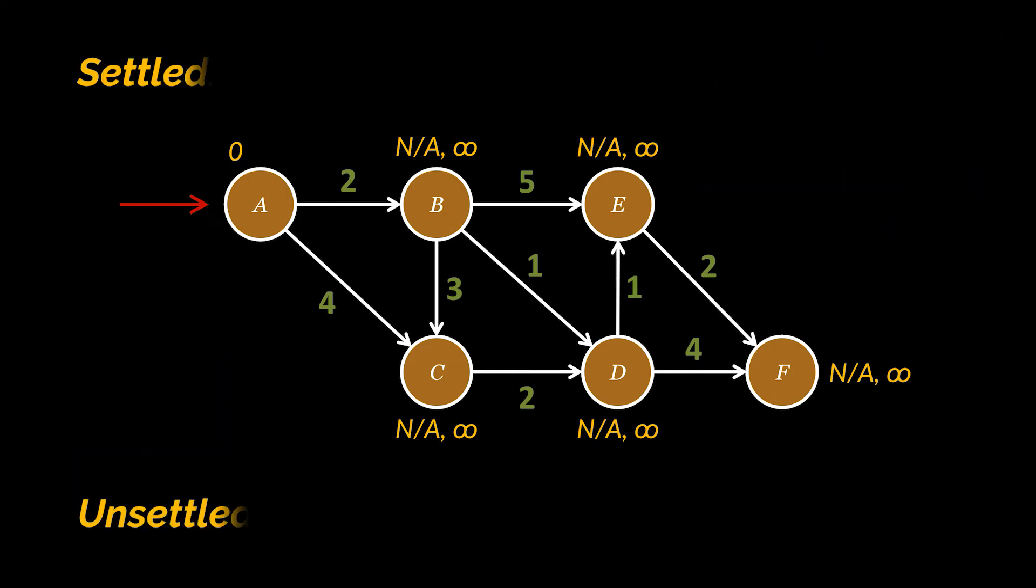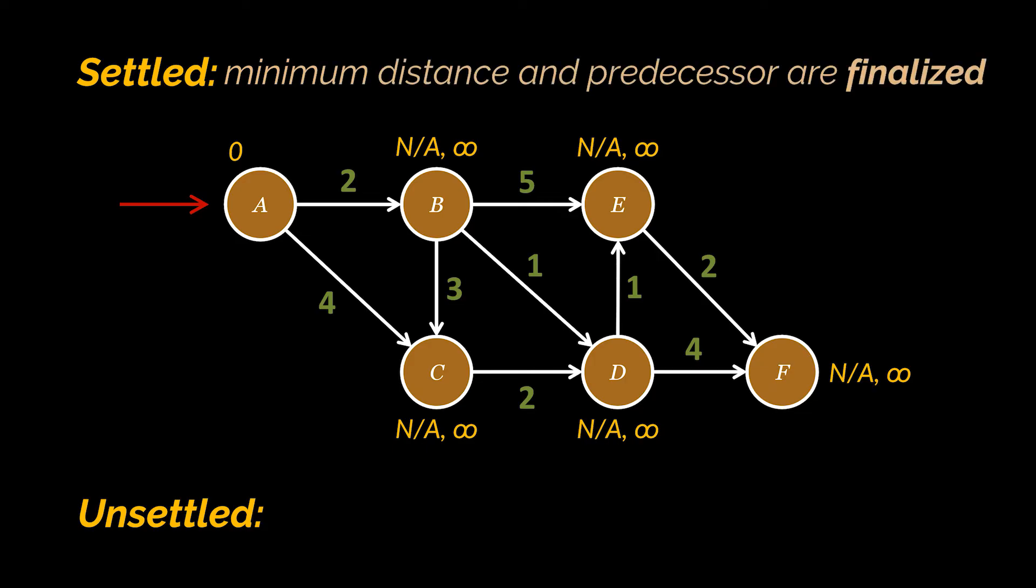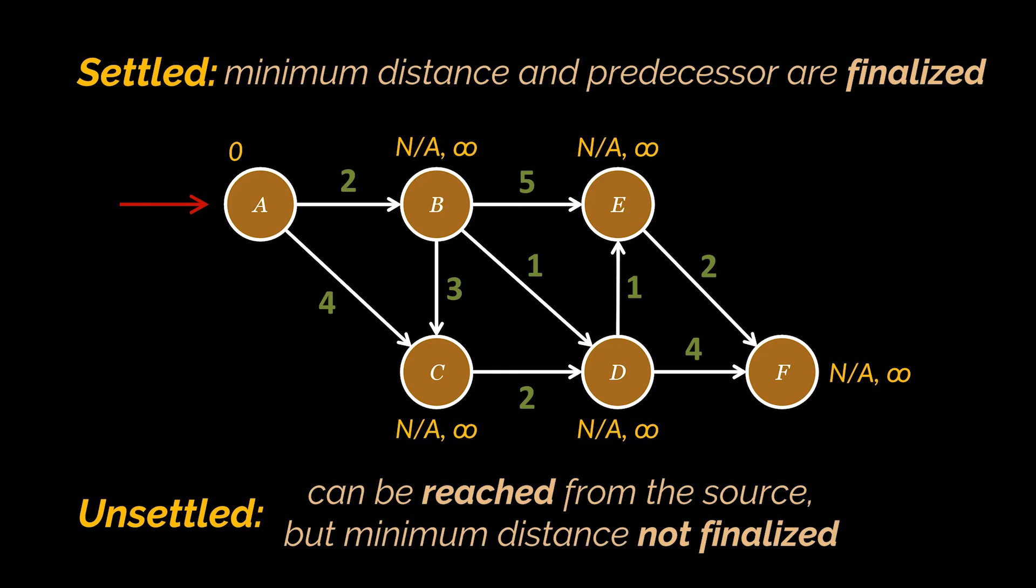To keep track of the process, we need to have two distinct sets of nodes: settled and unsettled. Settled nodes are the ones with a known minimum distance from our source, where the minimum distance and the predecessor are filled and finalized. The unsettled nodes are the nodes we can reach from the source but we still don't know the minimum distance that separates them from that source node.